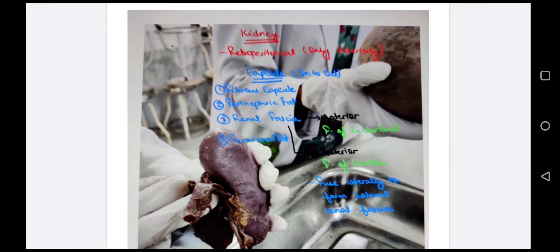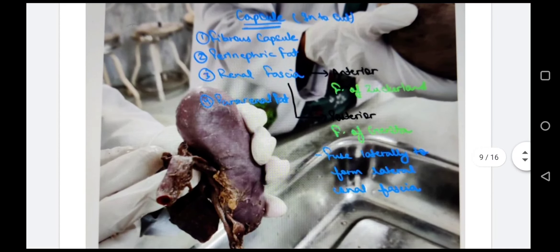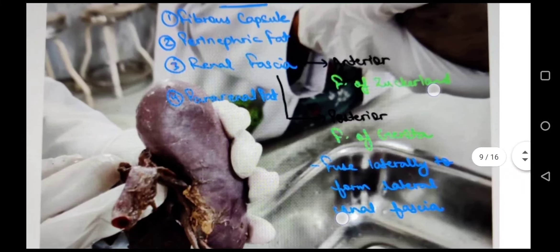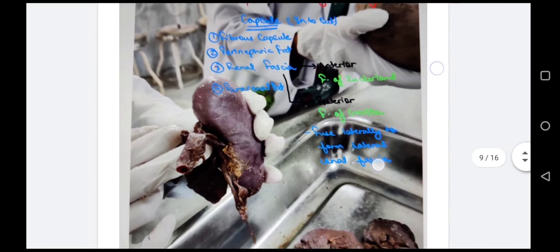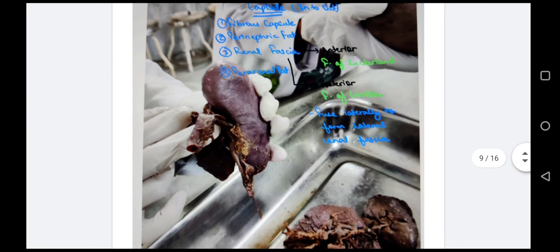The kidney is retroperitoneal and covered by peritoneum only anteriorly. The capsule layers from inside to outside are: fibrous capsule, then perinephric fat (perirenal fat), then renal fascia. The renal fascia has two layers: anteriorly the fascia of Zuckerkandl and posteriorly the fascia of Gerota. These two layers fuse laterally to form the lateral renal fascia. Outside the renal fascia is the pararenal fat (paranephric fat).